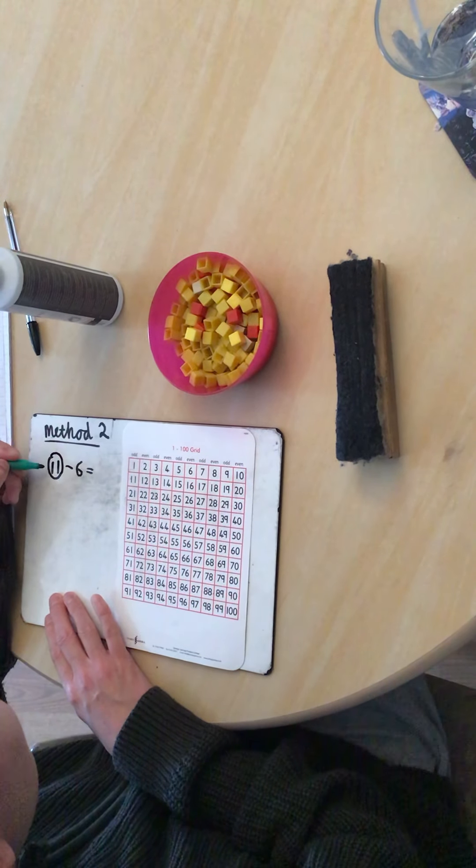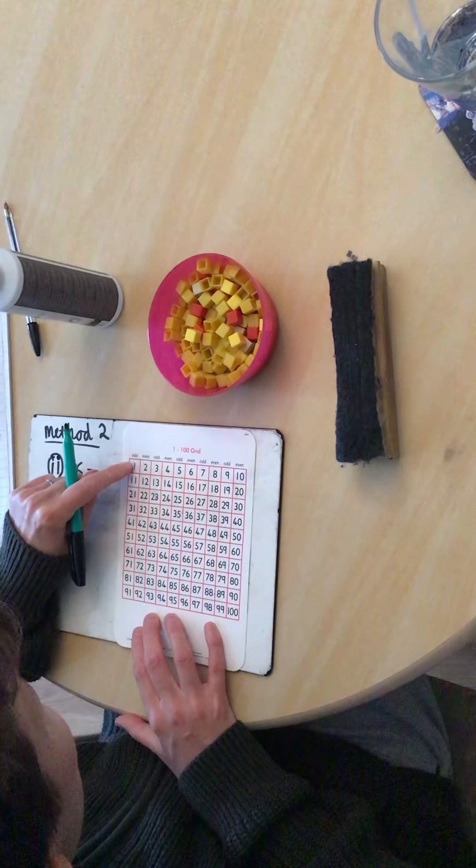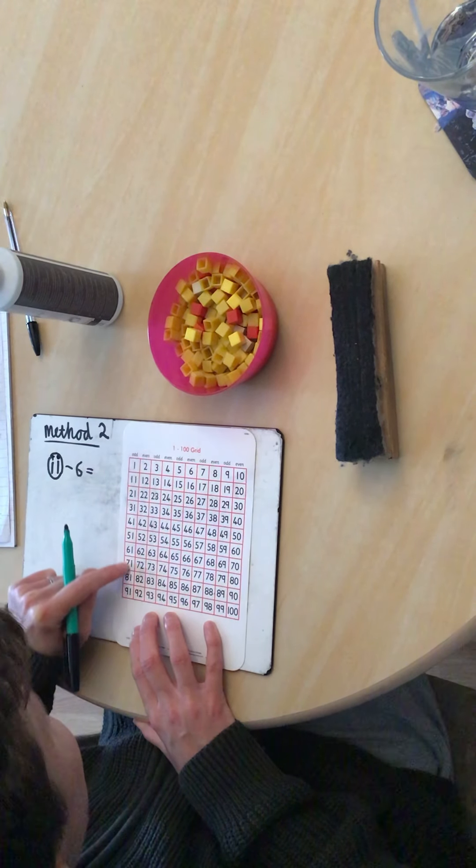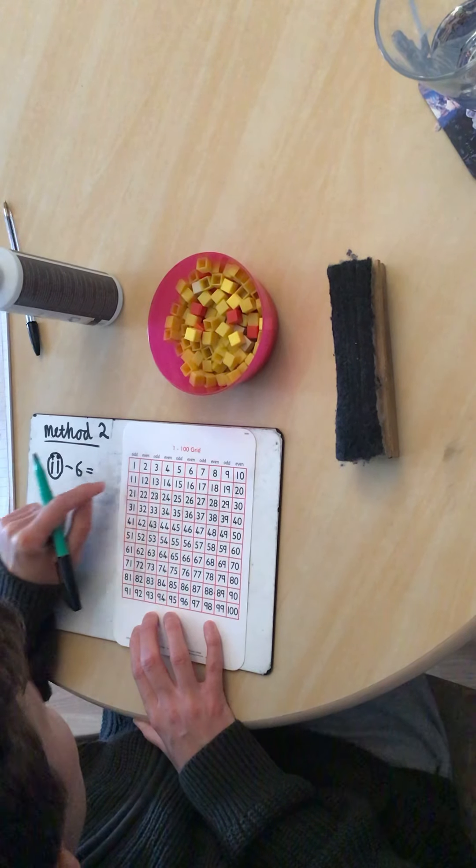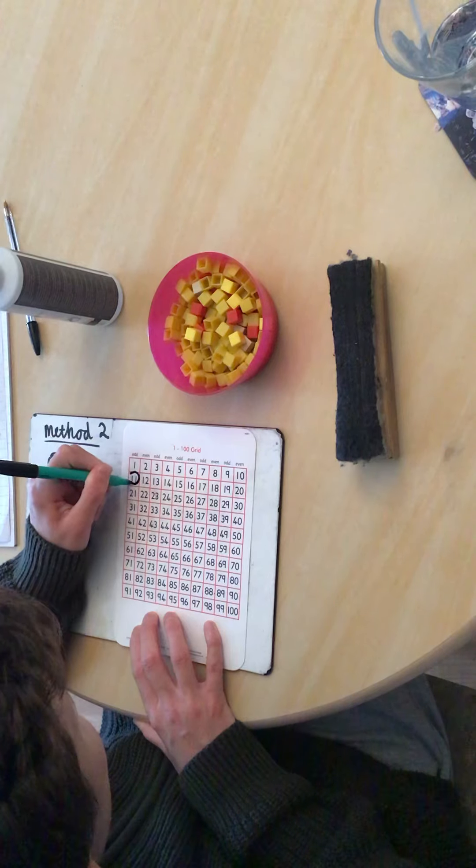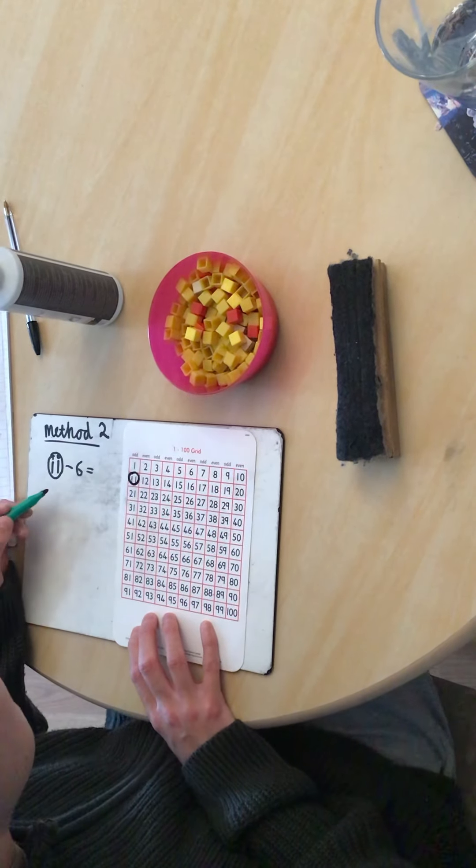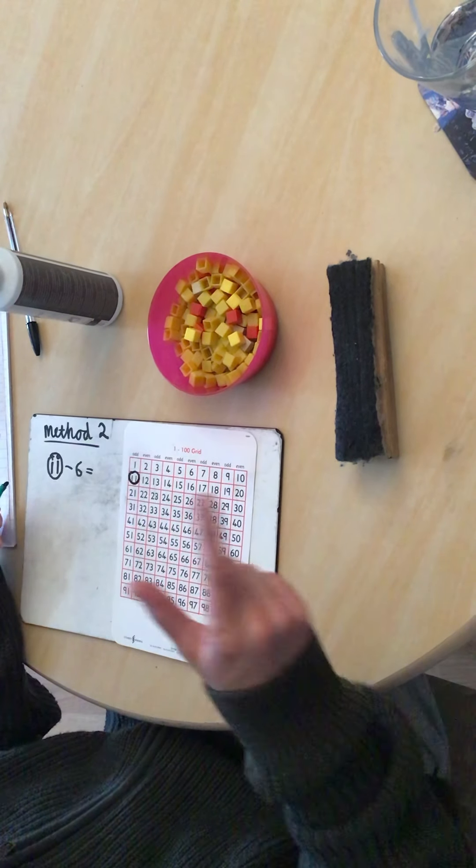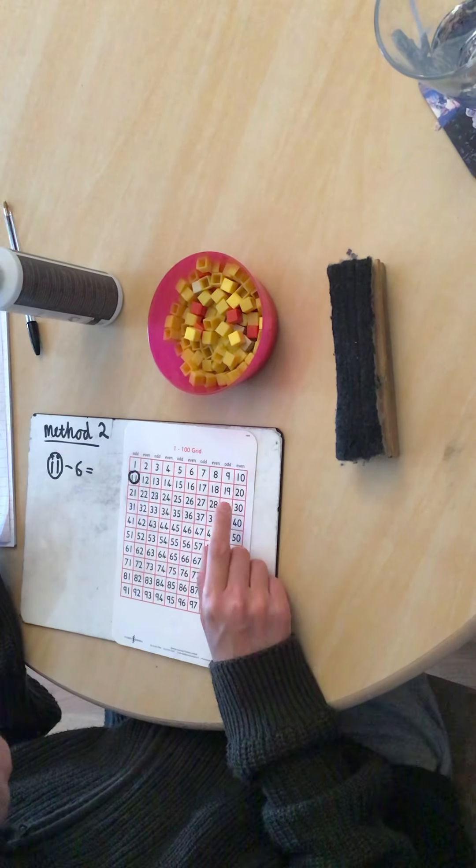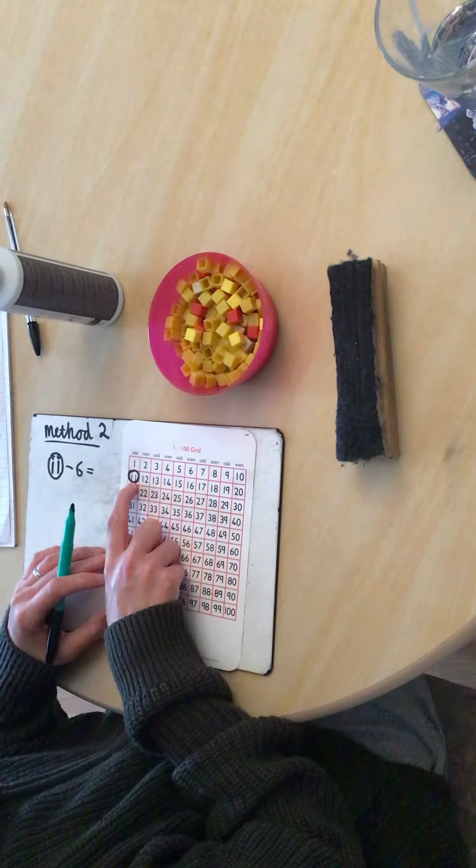So let's have a go at doing 11 take away 6. So children, what would we do first? Yes, we need to find the biggest number because we're starting with 11. So I'm going to circle 11 and I'm going to find it in my hundred square. Now I know that 11 has got 1, 1 and 1, 10. So here's my 1. So it's going to be all these numbers down here have 1, 1. So it must be in here. And I know it has 1, 10. Oh, this number is 11 because it's 1, 1 and 1, 10. And I'm going to circle 11.